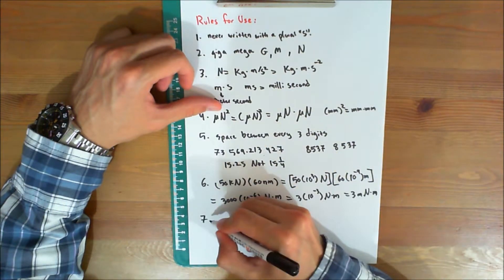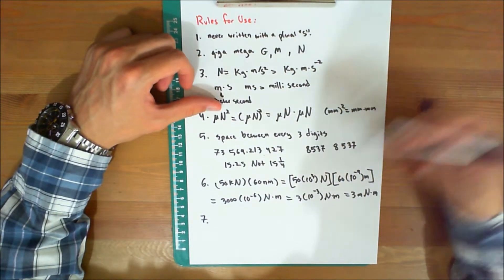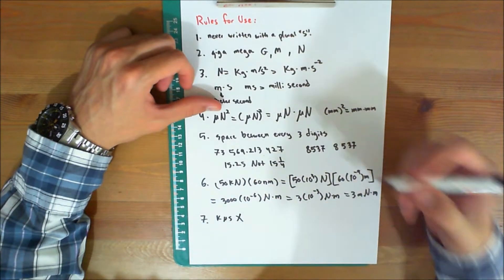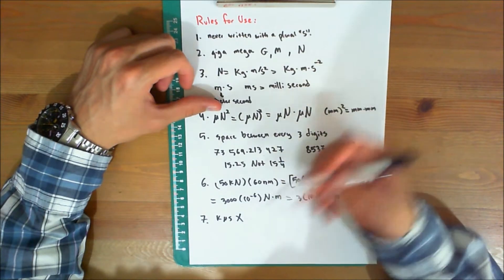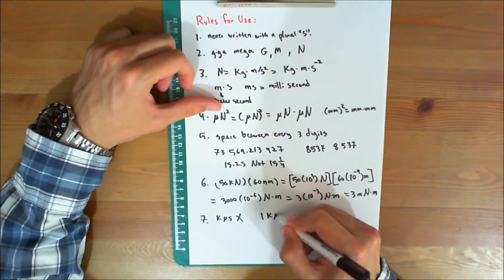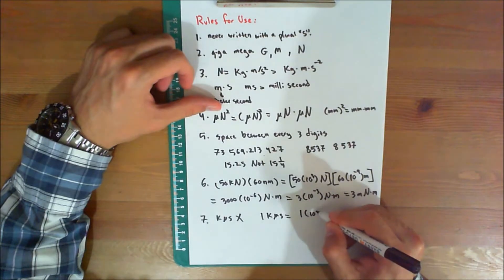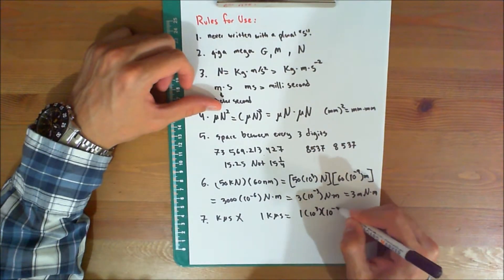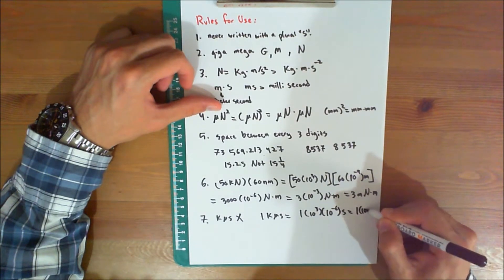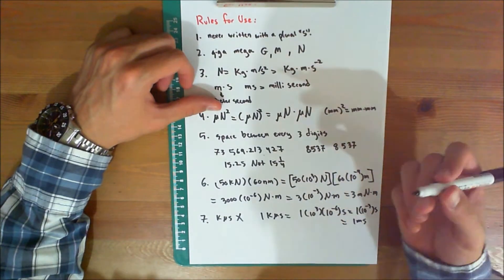Number seven: compound prefixes should not be used. For example, 'kilo microsecond' is wrong. Kilo microsecond should be expressed as millisecond, since 1 kilo microsecond equals 1×10³ × 10⁻⁶ seconds, which equals 1×10⁻³ seconds, which equals 1 millisecond. Why complicate things?